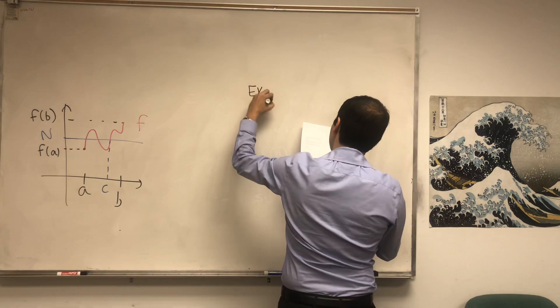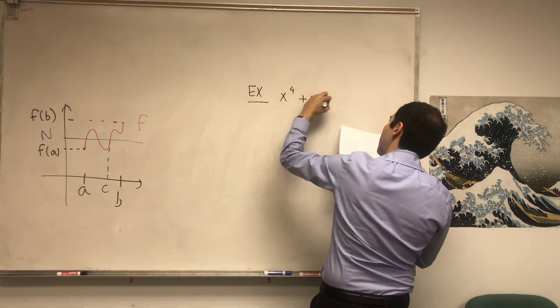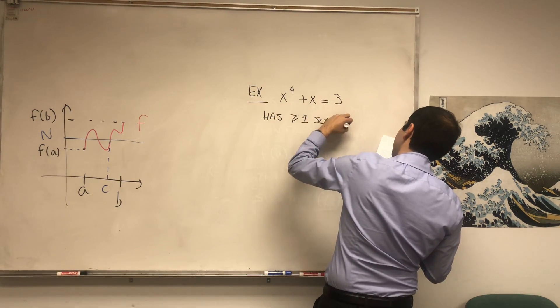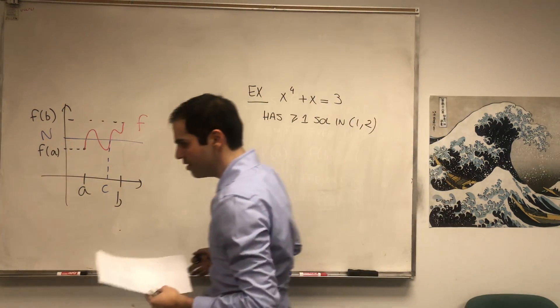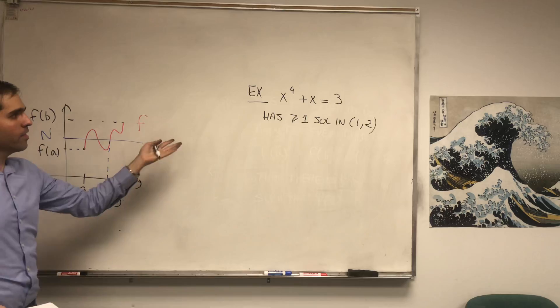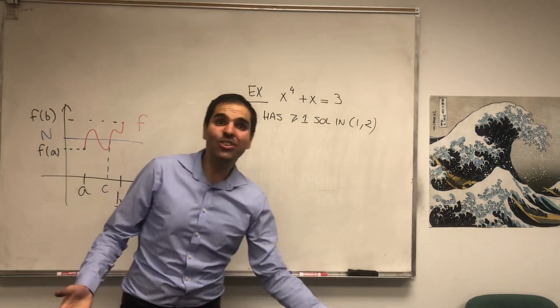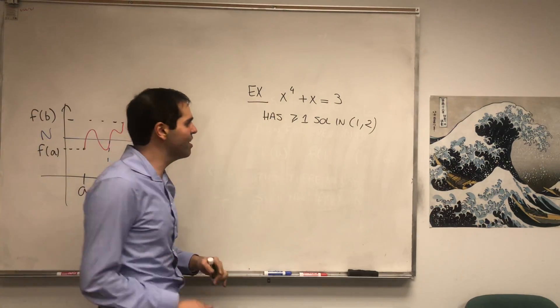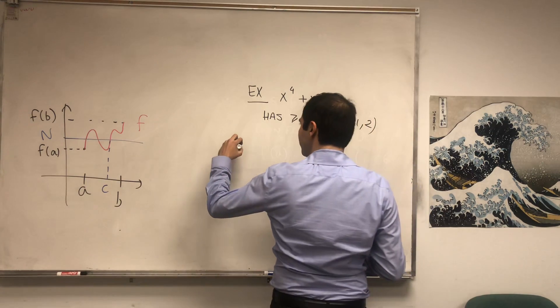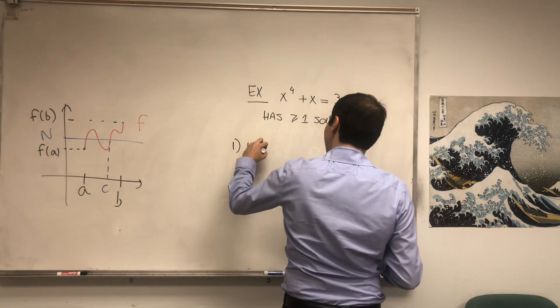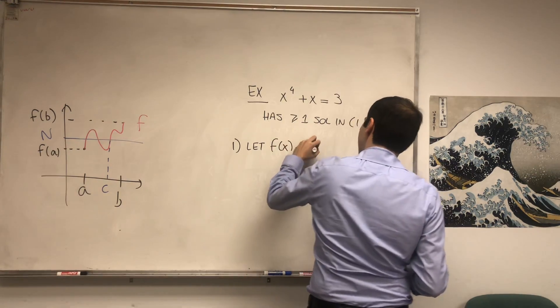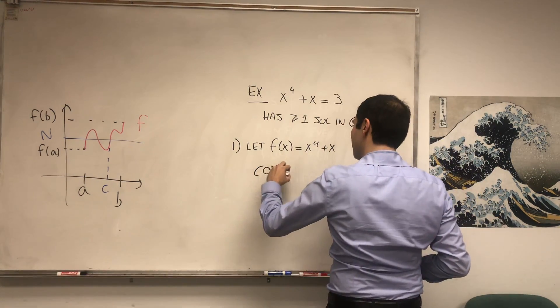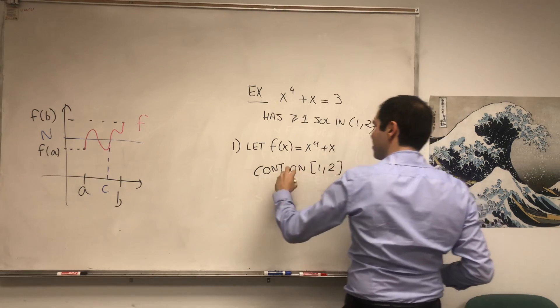For instance, let's show that x^4 + x = 3 has at least one solution in the interval [1,2]. And if you try to solve this directly, you would be in trouble. Because it turns out, well, you can't solve it, but it's very hard. Instead, let's try to use the Intermediate Value Theorem. So let f(x) be x^4 + x. And that's a continuous function on the interval [1,2]. So that's very important.